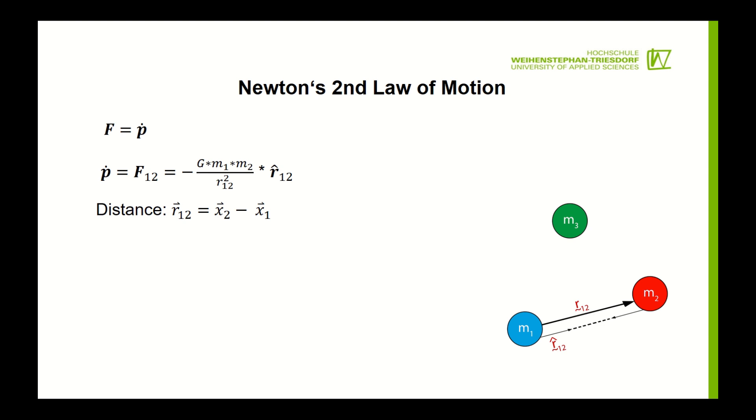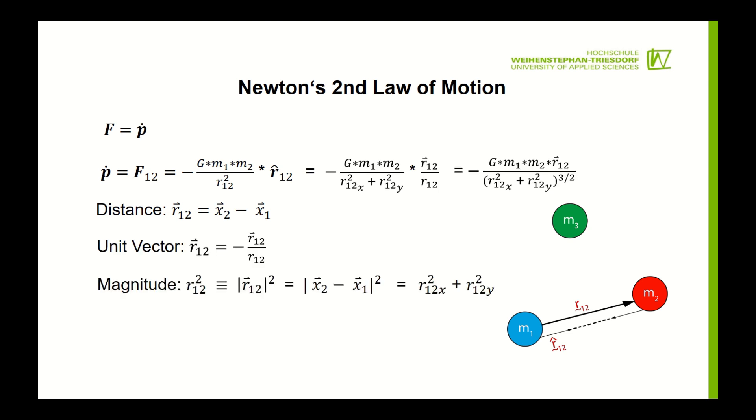Here f12 is the gravitational force of m1 on m2, r12 is the displacement vector pointing from m1 to m2, x1 and x2 are the coordinates of the masses m1 and m2, and G is Newton's universal gravitational constant which for the purpose of simulation we will set equal to 1.